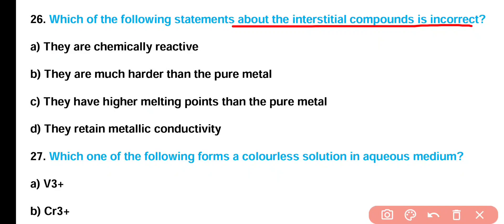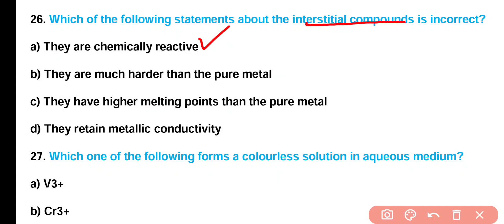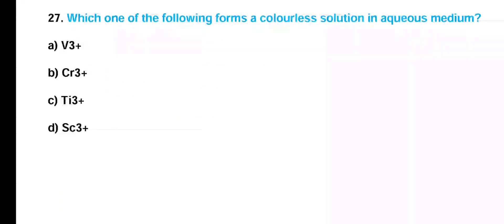Question number 26: Which of the following statements about interstitial compounds is incorrect — (A) they are chemically reactive, (B) they are much harder than pure metal, (C) they have higher melting point than pure metal, or (D) they retain metallic conductivity? Correct answer is option A. Interstitial compounds are not chemically reactive; rather they are inert compounds.